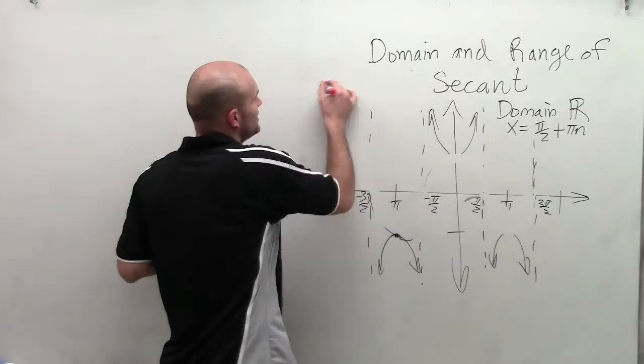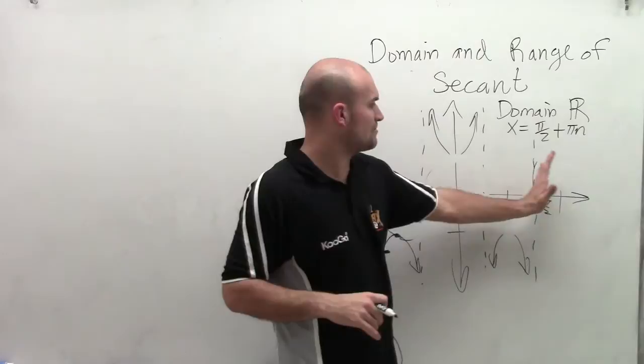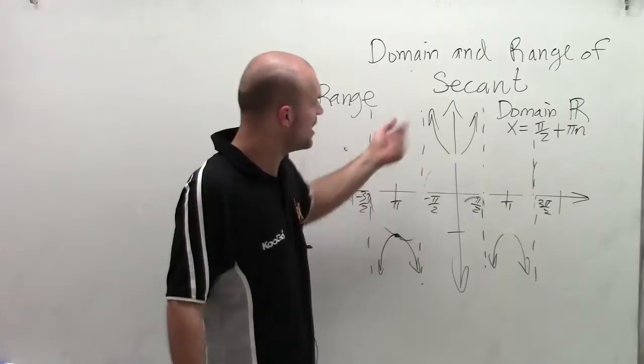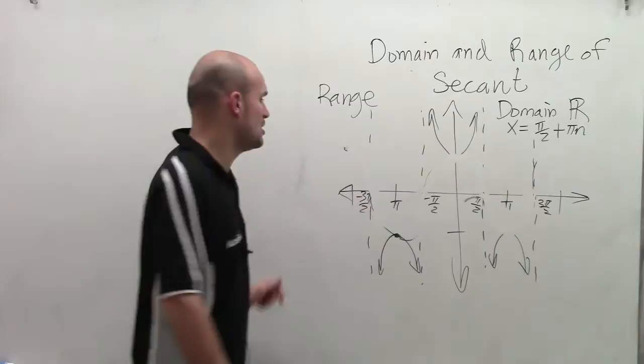When looking at the range, now we're going to be looking at the y values. So we know that the x values cannot be evaluated at our vertical asymptotes, but we don't have any horizontal asymptotes. So we're looking at this and saying, what values are not a part of the range?